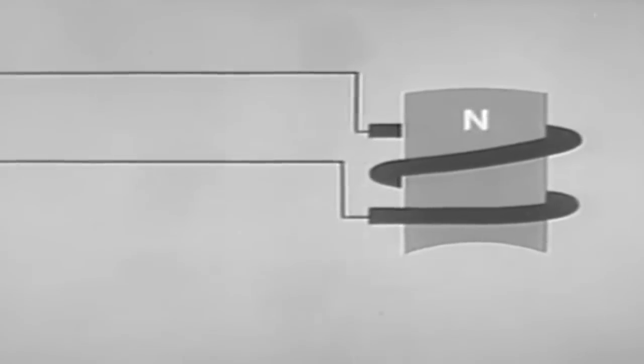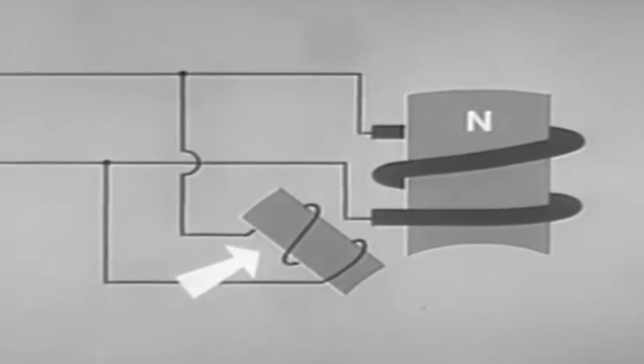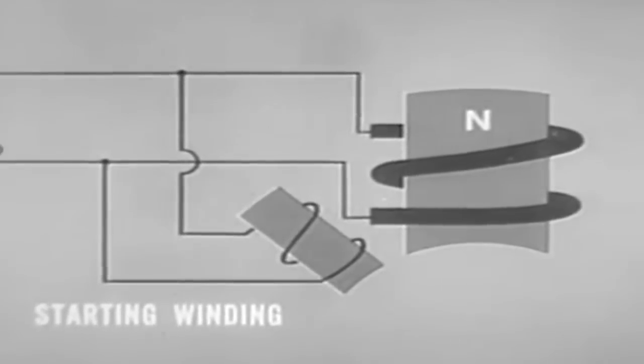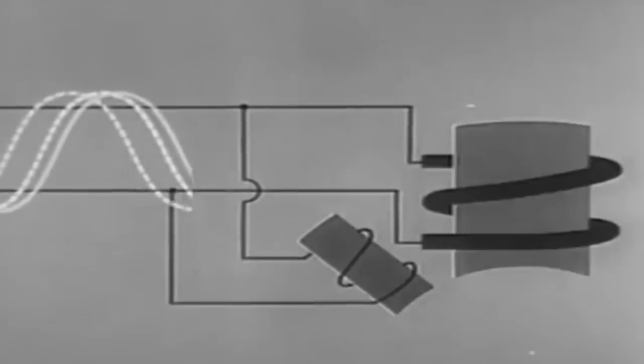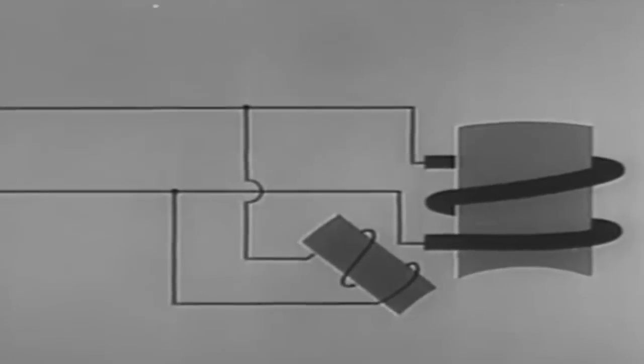Another method is the use of starter poles with high resistance windings. The high resistance in the starter winding causes the current to be out of phase with the current in the low resistance winding of the main pole. Magnetic fields are formed progressively and relative motion is begun.